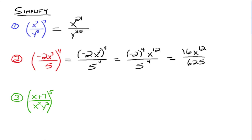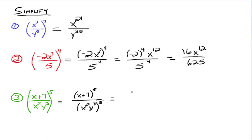Let's do one more: x plus 7 over x squared y cubed, all raised to the 5th power. The numerator is x plus 7 and the denominator is x squared y cubed. Using the quotient rule, we take x plus 7 raised to the 5th power over x squared y cubed raised to the 5th power. But notice: the numerator is not a product raised to an exponent — it's a sum raised to an exponent, x plus 7. We talked about that in the previous video, so there's nothing we can do with x plus 7 raised to the 5th right now. We have to leave it as is.